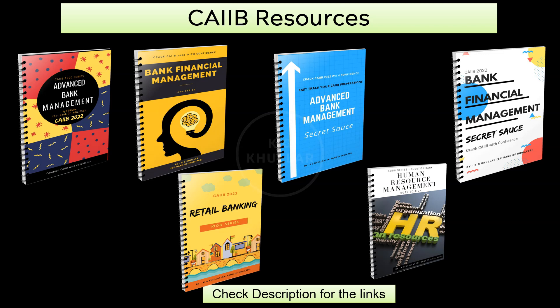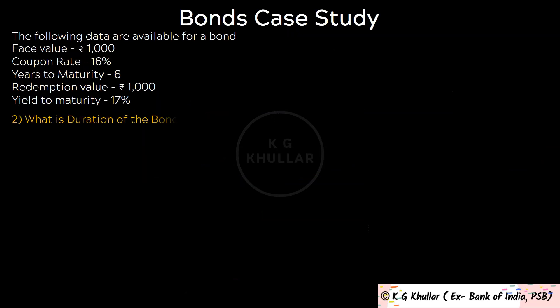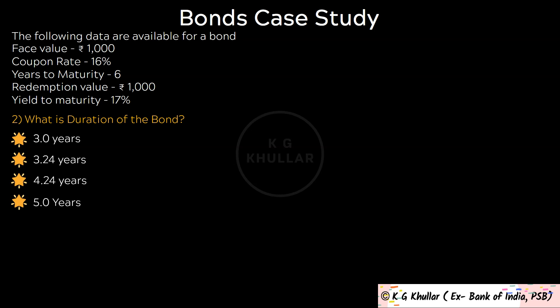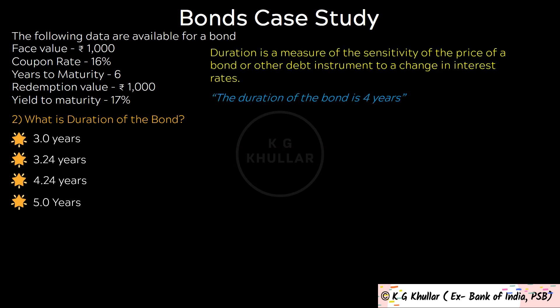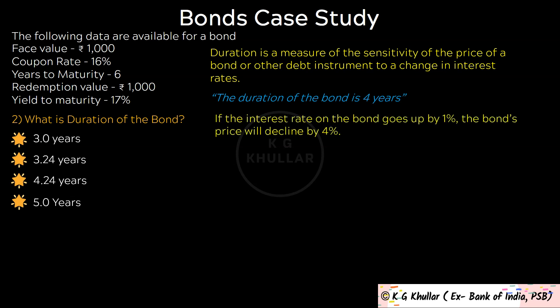The next question of the case study is: what is the duration of the bond? Duration is asked very often in CIB. Duration is basically a measure of the sensitivity of the price of the bond or other debt instruments to a change in interest rates. When we say the duration of the bond is 4 years, it means that if the interest rate goes up by 1%, the bond price will decline by 4%. Duration of the bond is quoted in years.